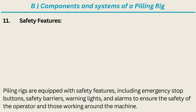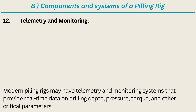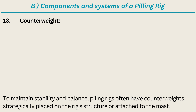Safety Features: piling rigs are equipped with safety features including emergency stop buttons, safety barriers, warning lights, and alarms to ensure the safety of the operator and those working around the machine. Telemetry and Monitoring: modern piling rigs may have telemetry and monitoring systems that provide real-time data on drilling depth, pressure, torque, and other critical parameters. Counterweight: to maintain stability and balance, piling rigs often have counterweights strategically placed on the rig's structure or attached to the mast.